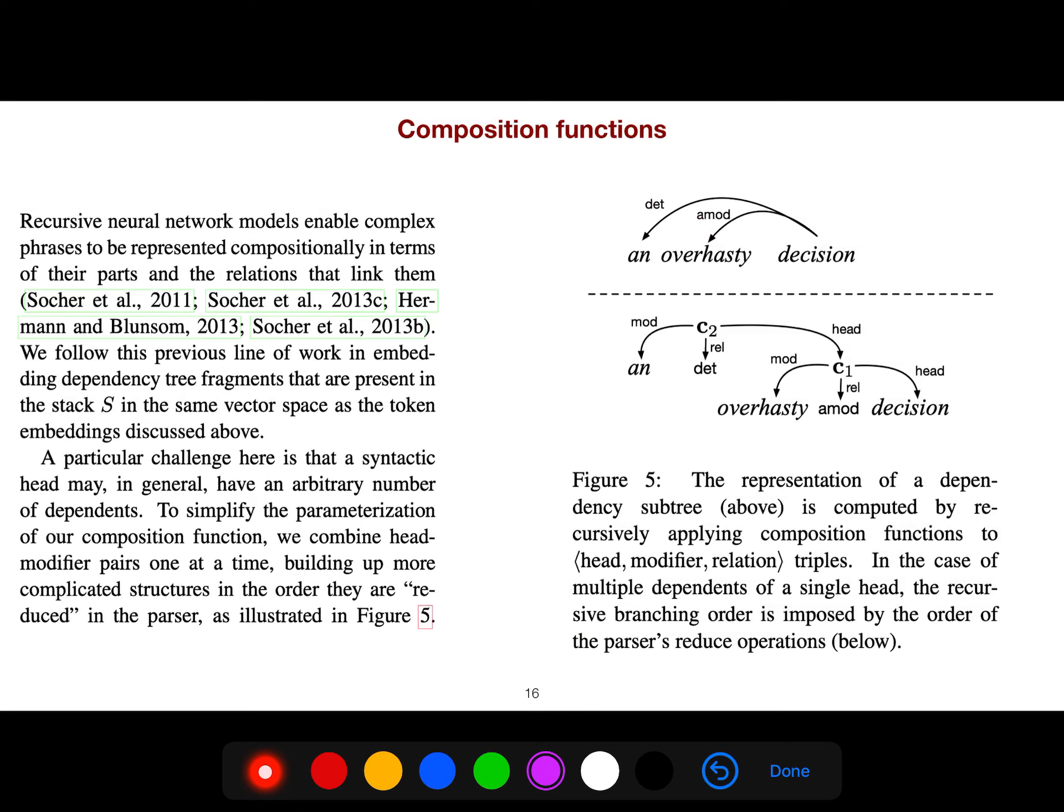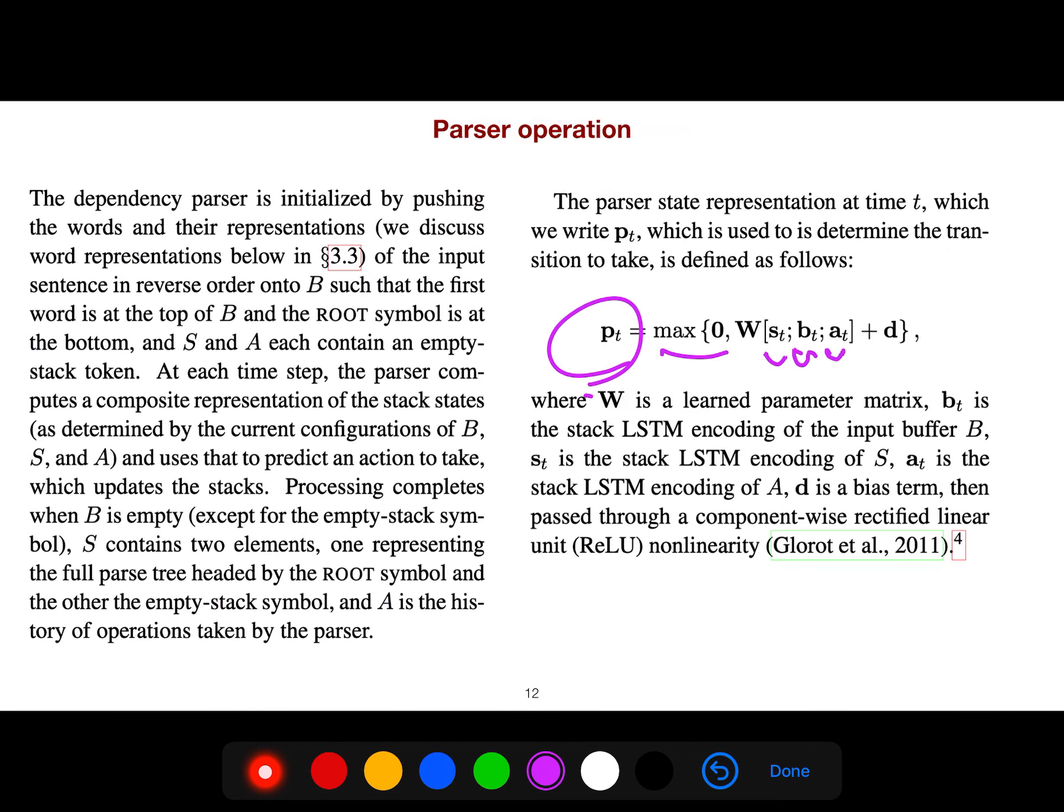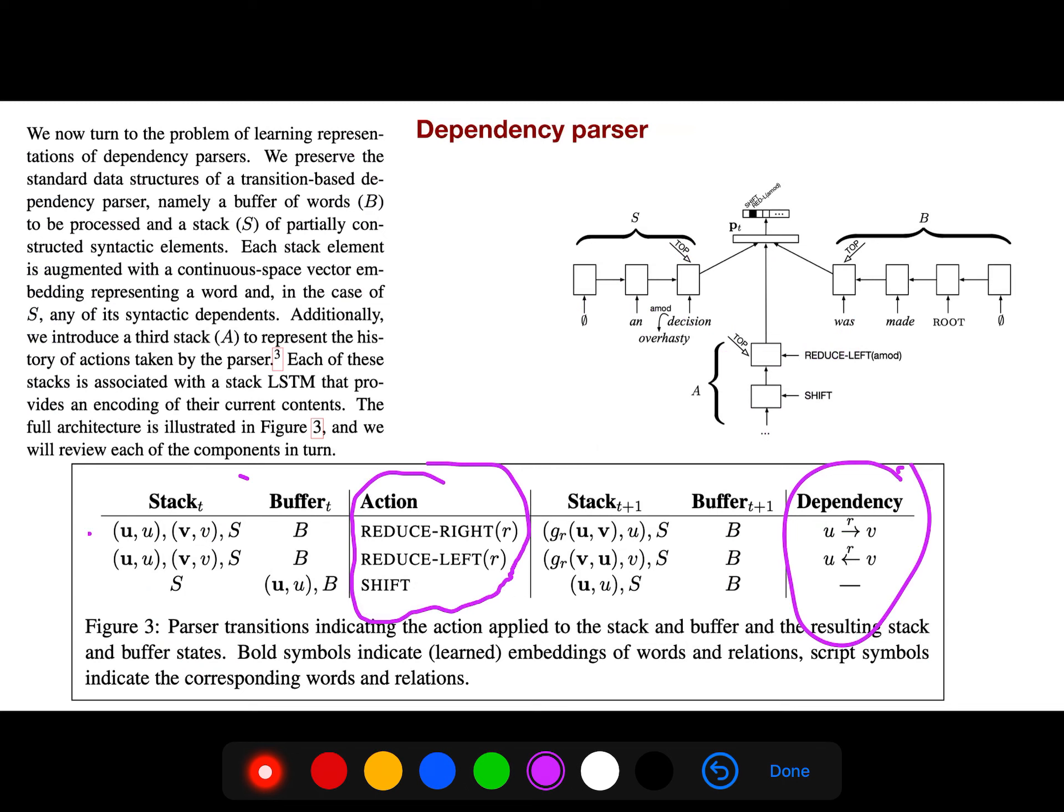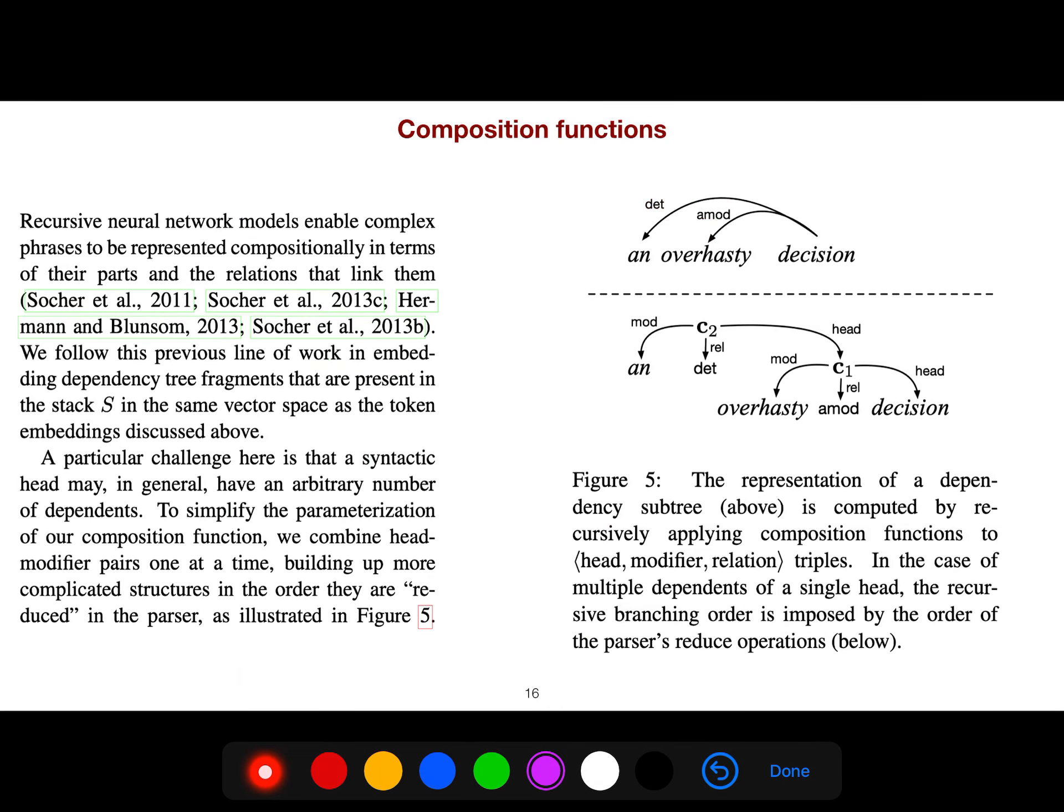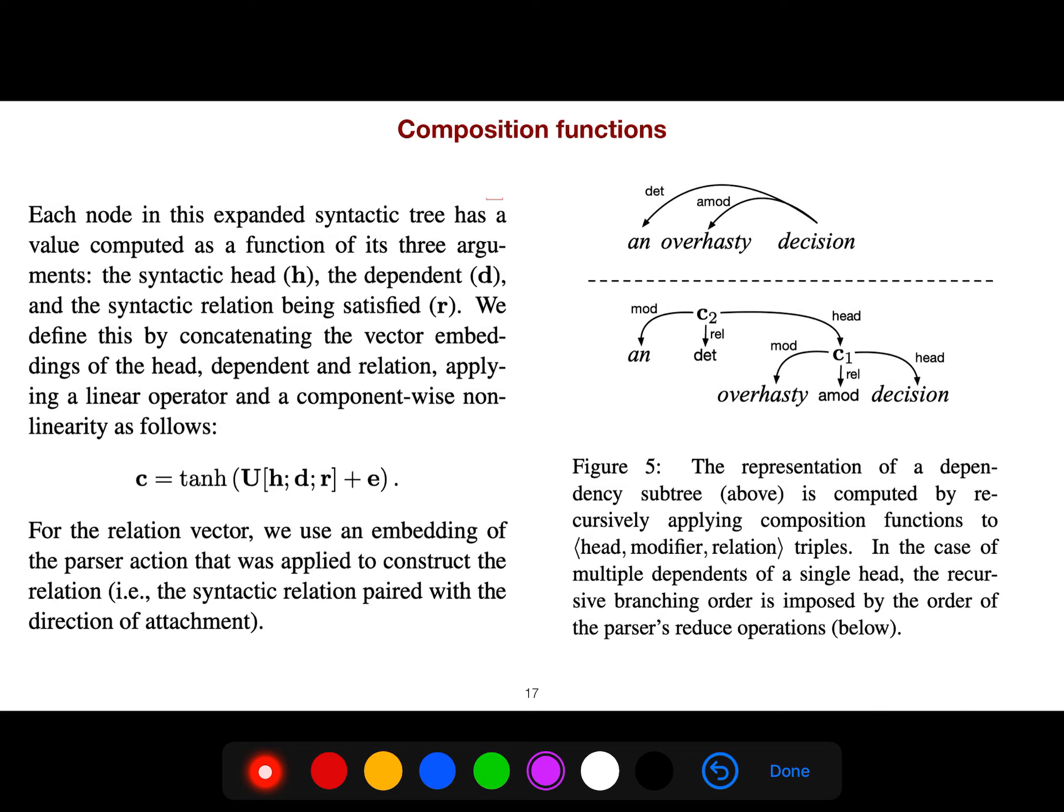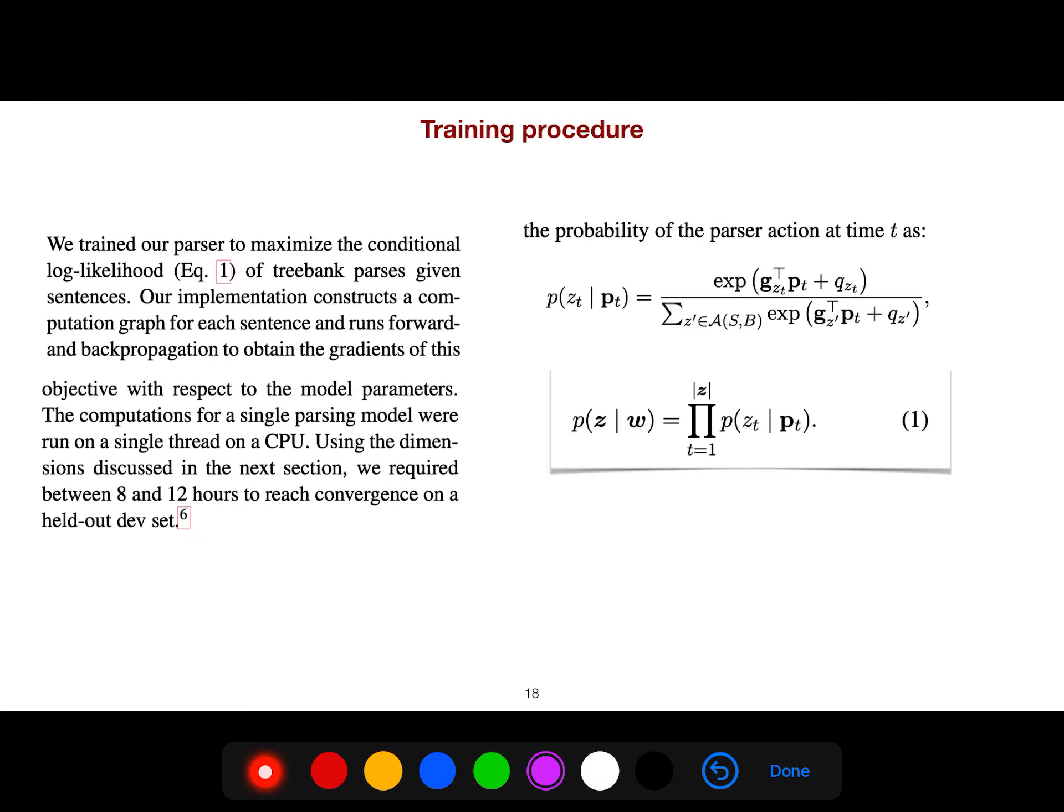You can also use composition functions. Why do we need this composition function? If you come back to the original architecture here, for example 'a decision over hasty decision', it's something that is compositional so you need to represent it somehow. What is better than tree LSTM? But here they represent it with this composition function: they concatenate h_d and r and they take the tanh activation to get c.